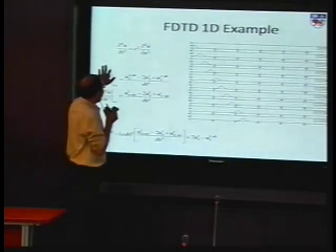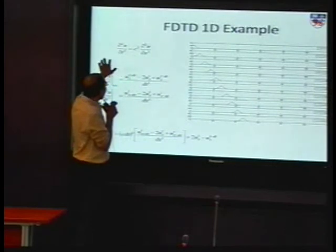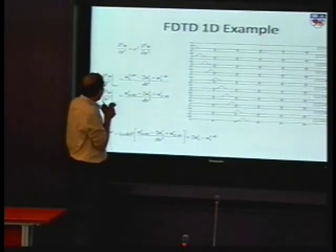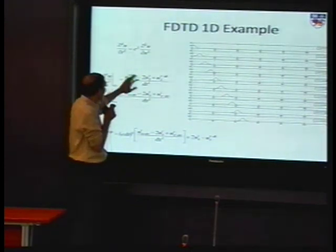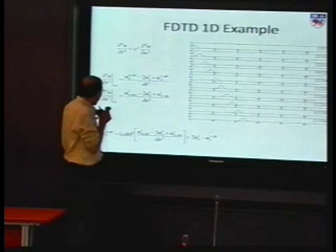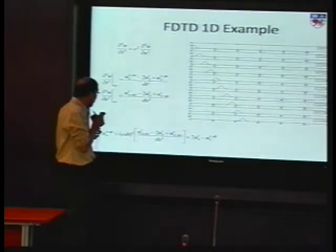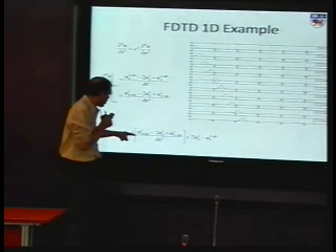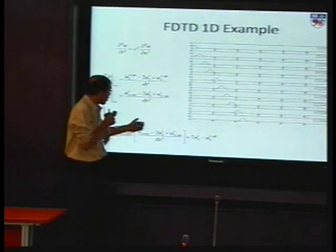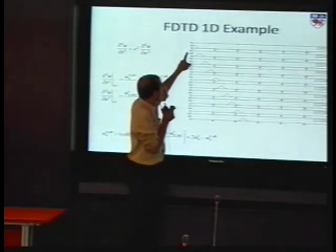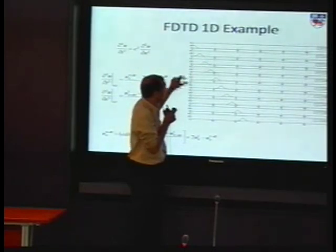For example, we can consider this 1D example, which is a simple wave propagation equation. If we use a Taylor approximation, we can represent differential equation in a difference equation form. For difference equation form, we can see that we can get the next time field value using all the values available at one time step before. Basically, this example shows, using this 1D example, how we calculated how the wave propagates with time.